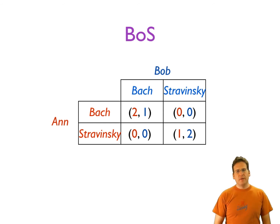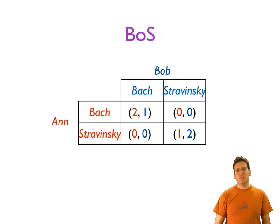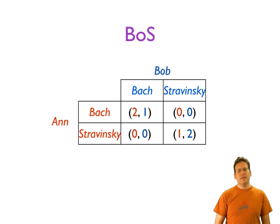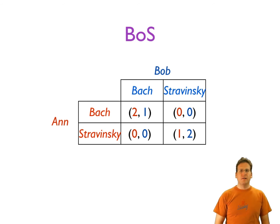Who are the players? Anne and Bob. What are their choices? They can either choose to go to the concert where Bach will be played or to the concert where Stravinsky will be played. Anne and Bob have not agreed in advance which concert to go to, so they make their choices independently. If they both go to the Bach concert, Anne gets two and Bob gets one. These numbers matter only in terms of which is larger for each player. If Anne goes to Bach and Bob goes to Stravinsky, her payoff is zero — so she'd rather both go to Bach.